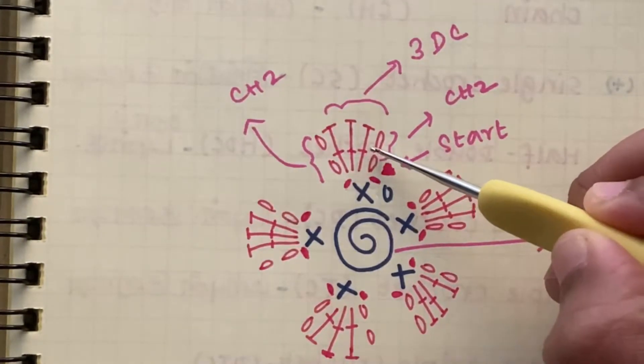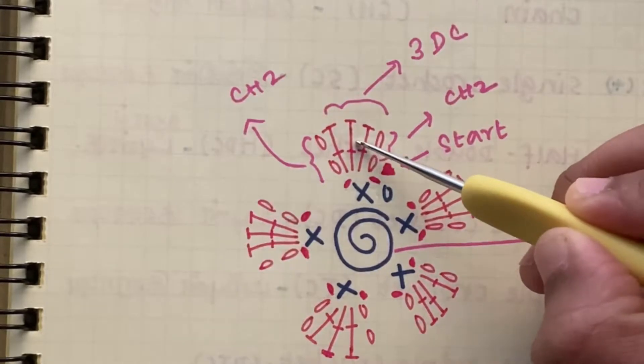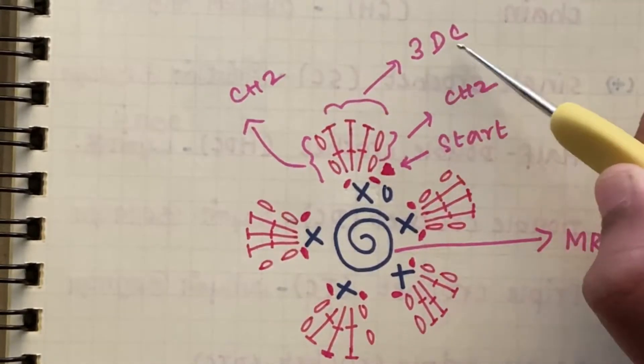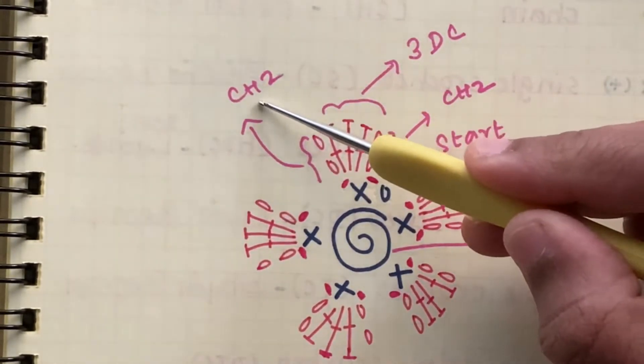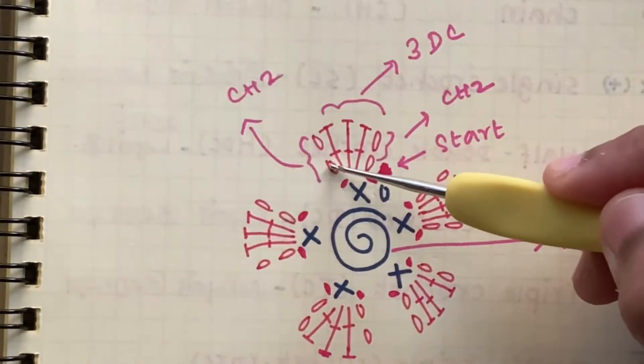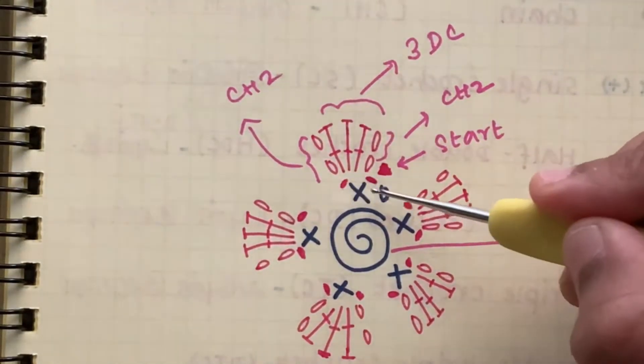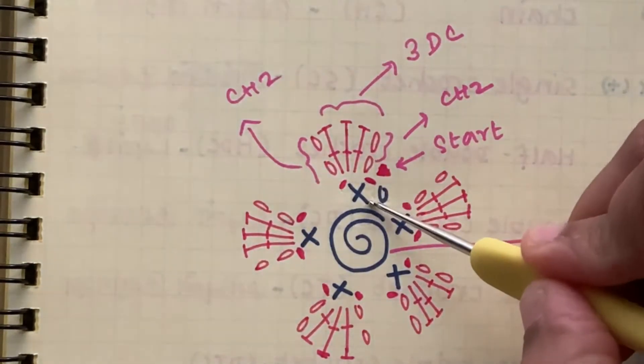And then we have done this stitch - this is a symbol for double crochet. We are going to do three double crochets, 3DC. And then again to finish the petal we have to do a chain two - one, two - and then slip stitch in the same single crochet.